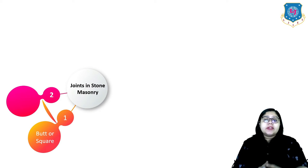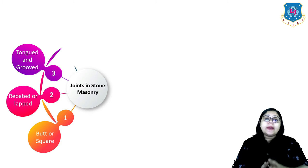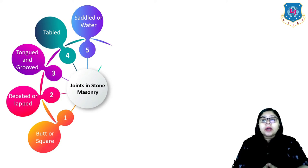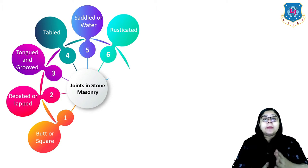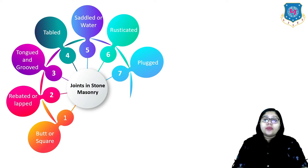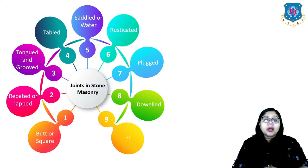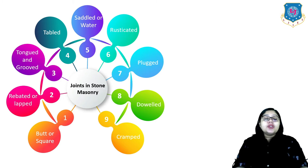Joints in stone masonry can be of various types: the first type is the butt or square; it can be rebated or lapped; then tongued and grooved; then tappled; then saddled or watered; then rusticated; plugged; doweled; and lastly the cramped one. So let us see all one by one.